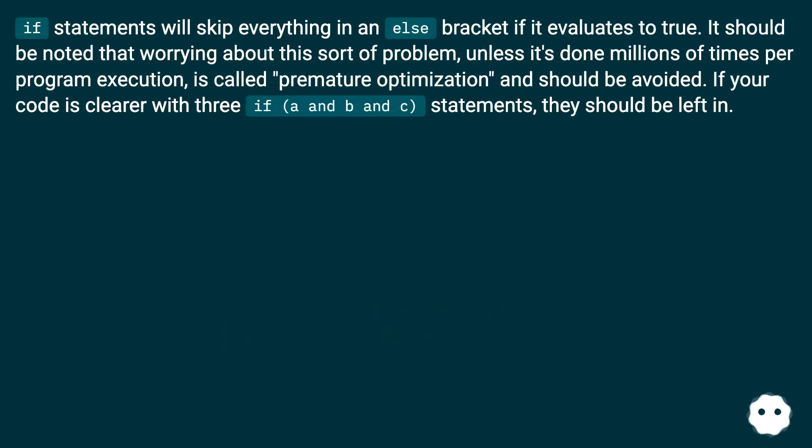If statements will skip everything in an else bracket if it evaluates to true. It should be noted that worrying about this sort of problem, unless it's done millions of times per program execution, is called premature optimization and should be avoided. If your code is clearer with three 'if a and b and c' statements, they should be left in.